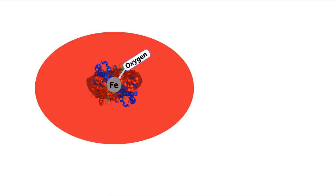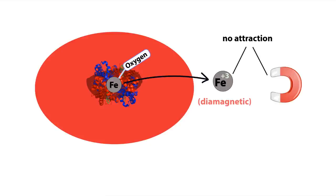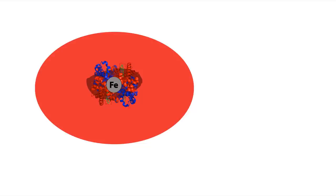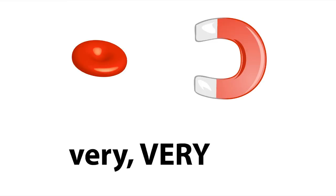When oxygen binds to iron, the iron atom has a charge of plus three, changing its electron structure to a diamagnetic state. When the iron is not bound to oxygen, its electron structure is at a plus two charge, making it paramagnetic. Yes, the iron in hemoglobin is technically magnetic, but hear me out, it's very, very weak.